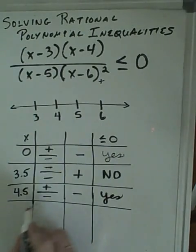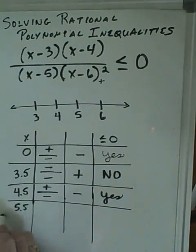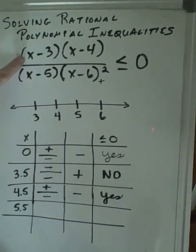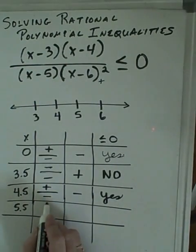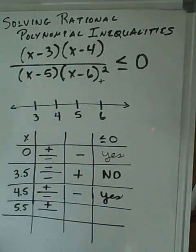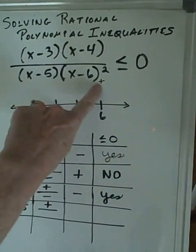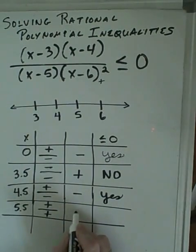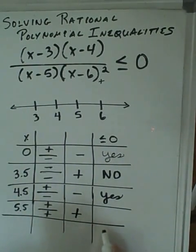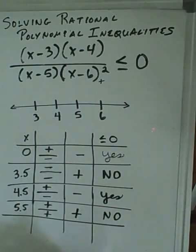We do that again between 5 and 6, such as 5.5. 5.5 here, that's going to be positive. 5.5 here, that's also going to be positive. Then we come down here, 5.5 here is positive and it's also positive all the time here. So we get a positive. A positive over a positive is positive, and a positive value is not less than zero. So the answer there is no.